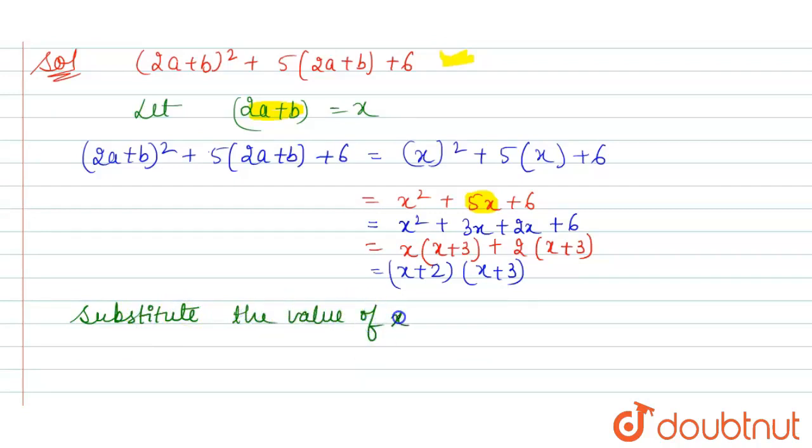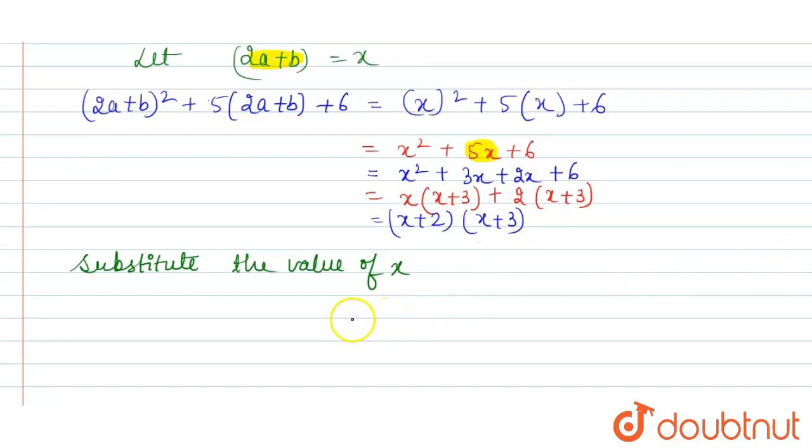So here we get (2a + b + 2)(2a + b + 3). This is the factorization of (2a + b)² + 5(2a + b) + 6. So this is our answer. Thank you.